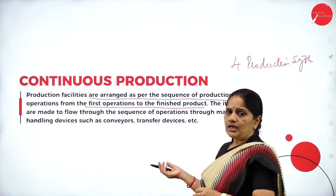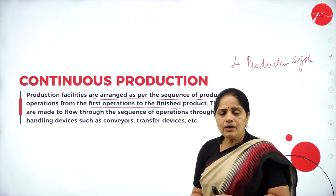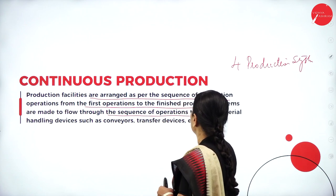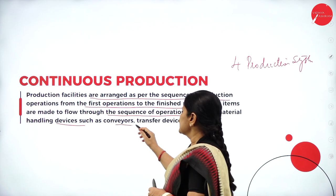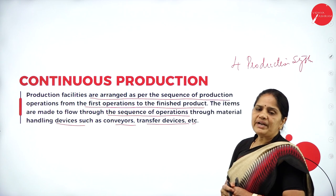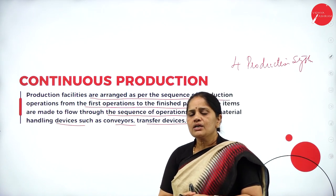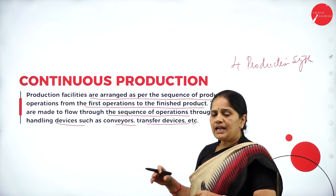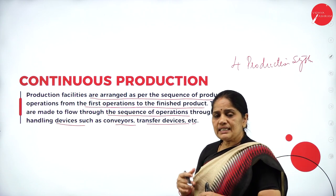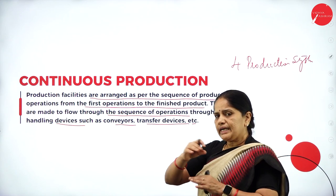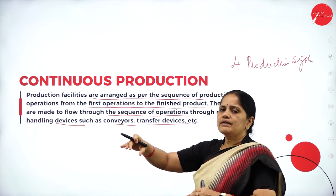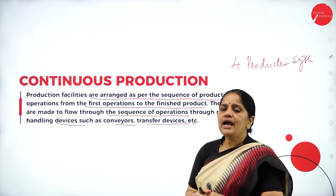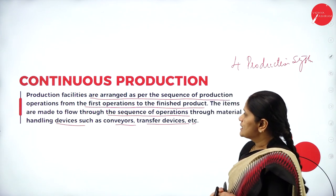From the first process to the last process, there is a change in the product — a form utility is added, and the raw materials are converted into a finished product. Items are made to flow through the sequence of operations through material handling devices such as conveyors and transfer devices, which move materials from one machine to another on a platform-like system. Everything is automated with no human element involved.